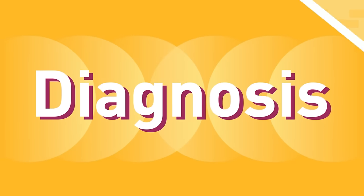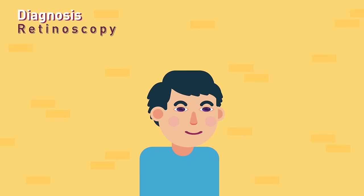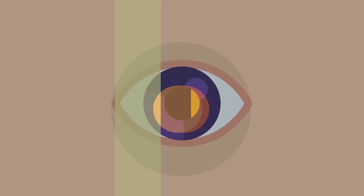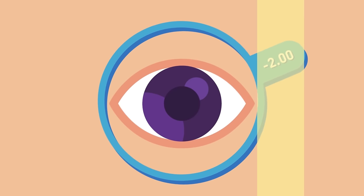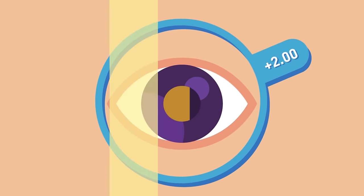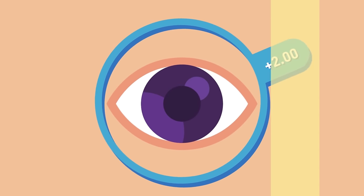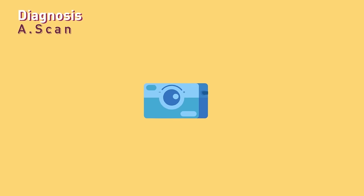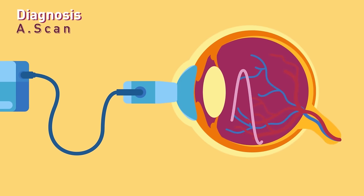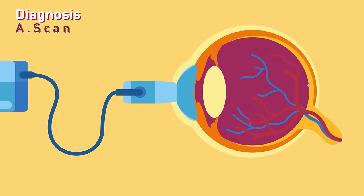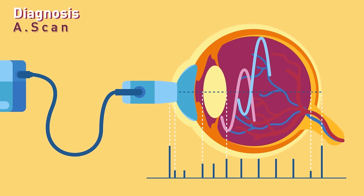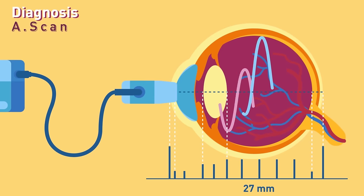Diagnosis. Retinoscopy: a handheld device that throws light into the eye, allowing us to observe its movements and reflection, hence helping to confirm the refractive error. A-scan: a small ultrasound probe that throws ultrasound waves into the eyeball and detects their reflections or echo timings, calculating the eyeball length.